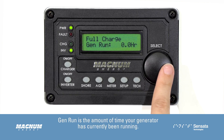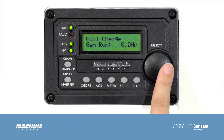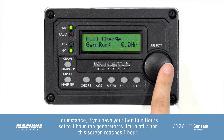Gen Run is the amount of time your generator has currently been running. This is also the timer that the system looks at to see if the generator should be told to stop. For instance, if you have your Gen Run hours set to 1 hour, the generator will turn off when this screen reaches 1 hour.